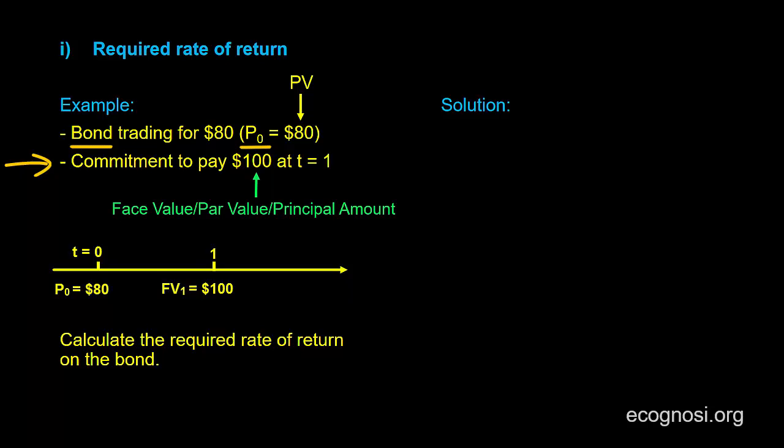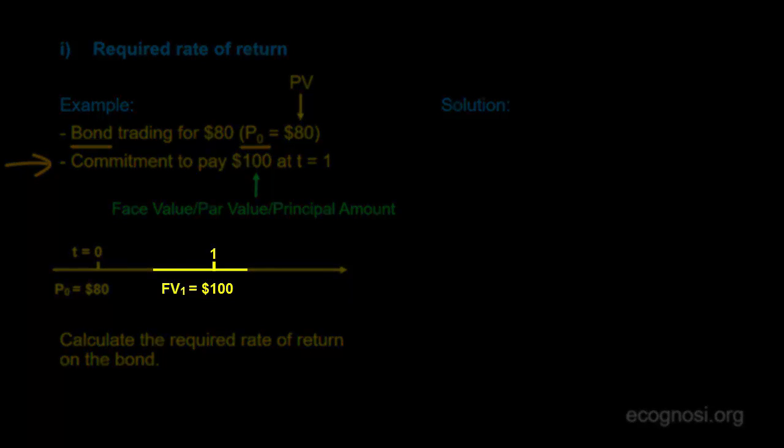So continuing from where we left off, this bond promises to pay $100 at t equals 1. Therefore, we can also interpret this payment as a future value at time 1, and this is what I did when I put our data on the timeline to make things more visual for you.